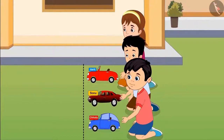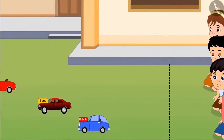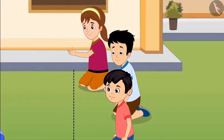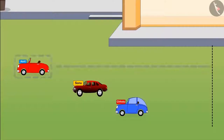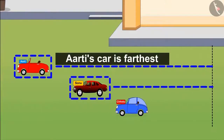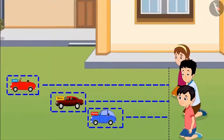One, two, three — all the cars started moving. After some time, all three cars stopped. Let us see which car stopped at the farthest point and which car stopped at the nearest distance. 'I won, I won! Oh, my car is the farthest from here. Sonu's car is behind my car and Chotu, your car is nearest to us.' So children, did you see? Aarti's car went the farthest and Chotu's car the nearest.